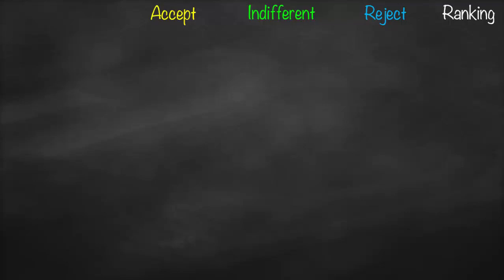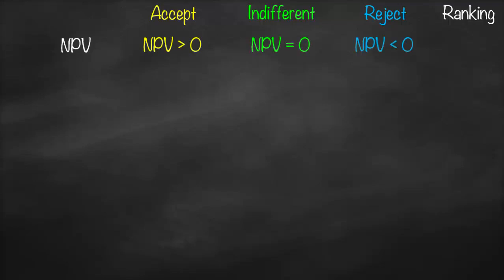We start with Net Present Value (NPV). The benchmark for NPV is zero. We accept the project if NPV is greater than zero, we are indifferent if NPV equals zero, and we reject if NPV is lower than zero (negative). For mutually exclusive projects, we choose the one with the higher NPV.